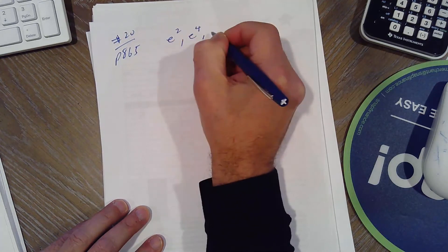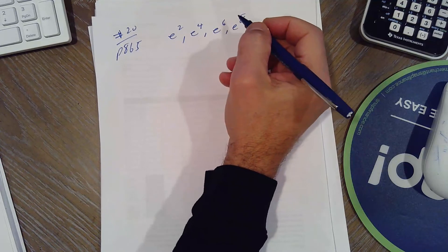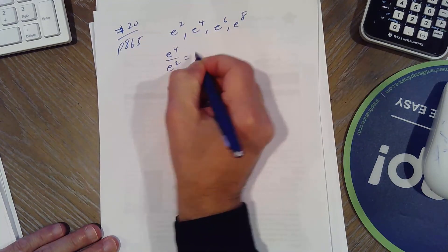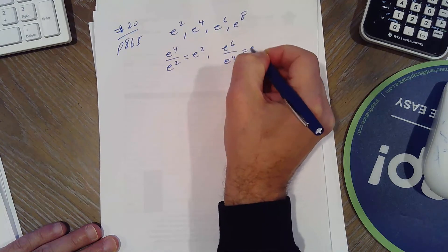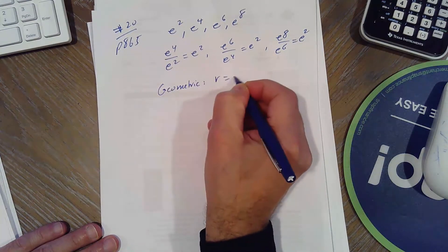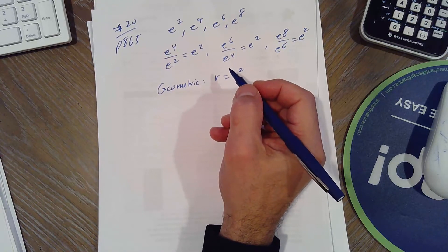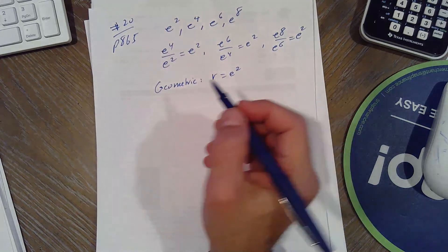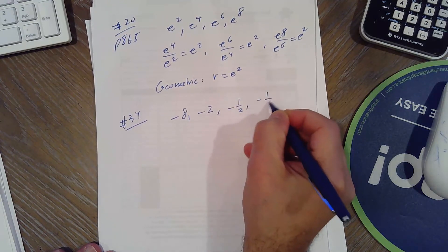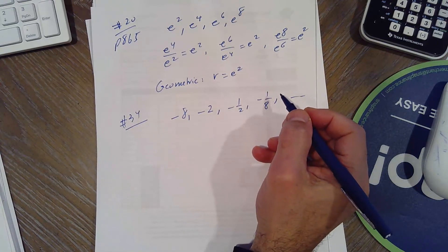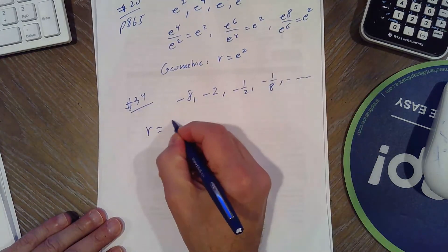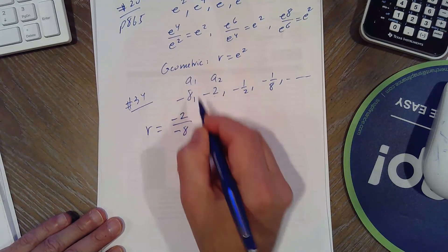For a sequence with common ratio e², we verify it's geometric by checking consecutive ratios: e⁶/e⁴ = e², e⁸/e⁶ = e². So it's geometric with common ratio e². To determine whether terms can be part of a geometric sequence, find the common ratio by computing a₂/a₁.